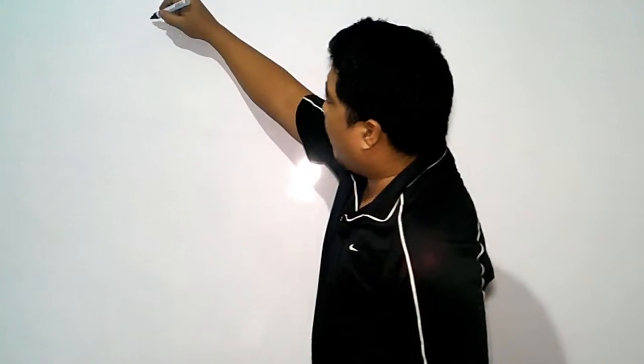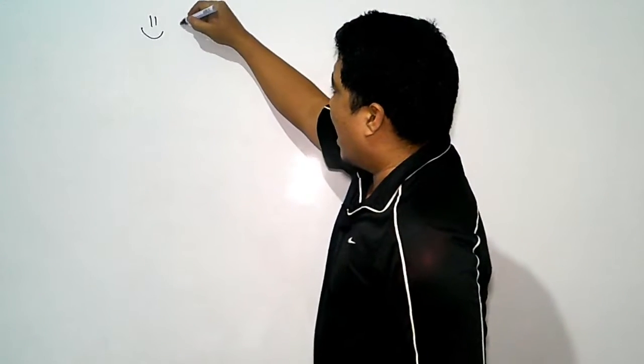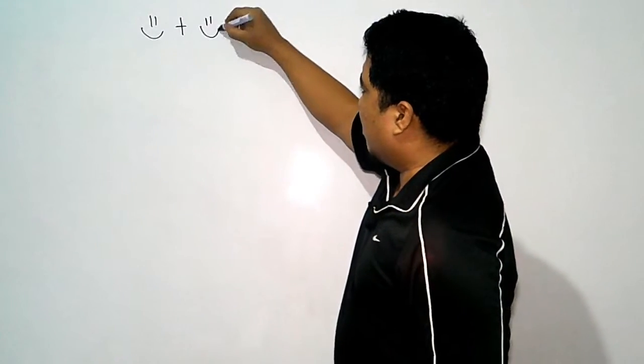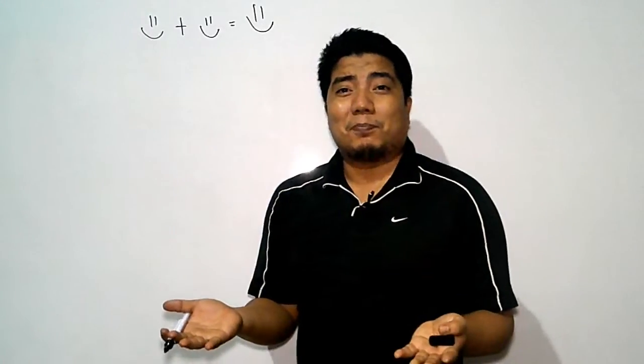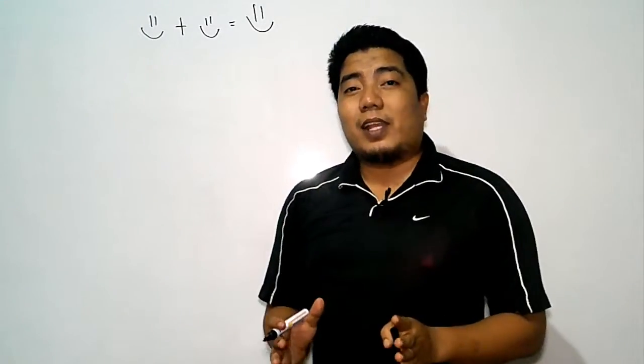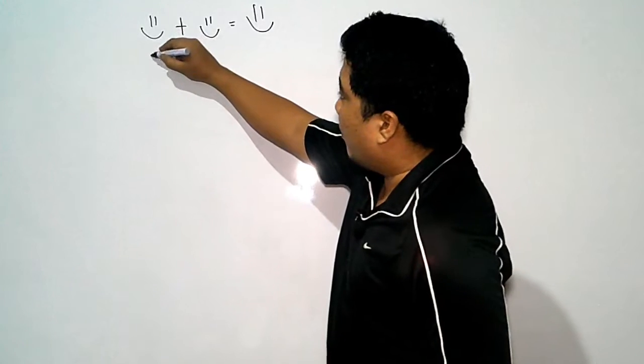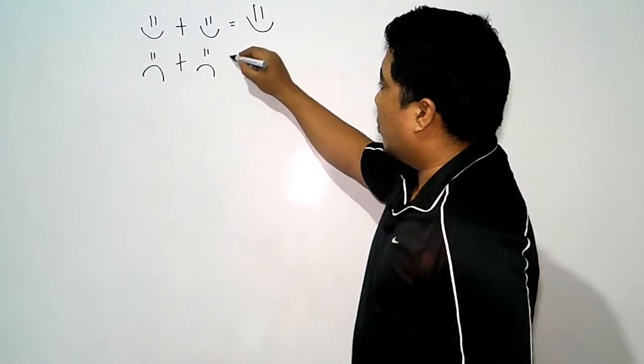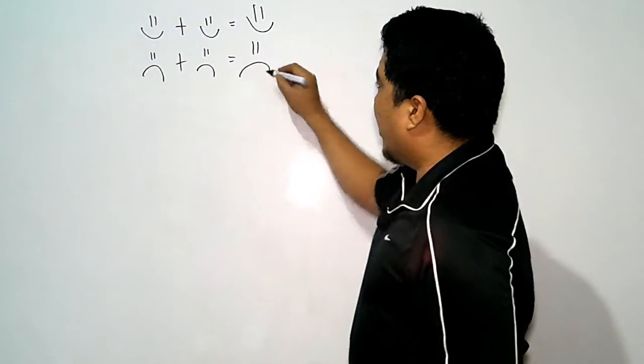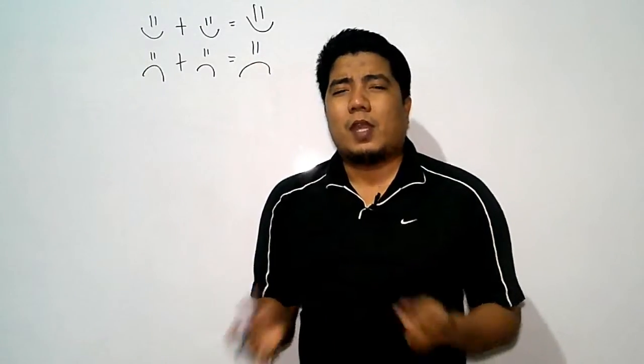Let's consider that positive numbers are happy face and negative numbers are sad face. If you have a positive number added by a positive number, then your answer is a bigger positive number. Easy, right? That context is the same if you have a negative value plus negative value.